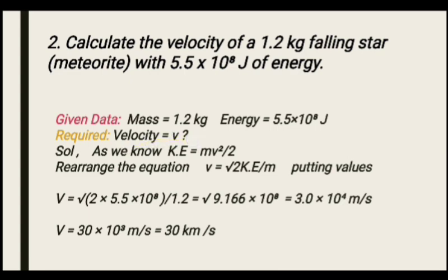Now for the kinetic energy problem. The equation of kinetic energy derived in previous lectures is KE equals half m v squared. We need to find velocity, so we rearrange this equation for v. Multiplying both sides and dividing by mass gives v squared equals 2 KE divided by m, and taking the square root gives v equals the square root of 2 KE divided by m.